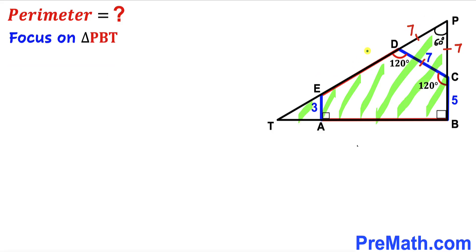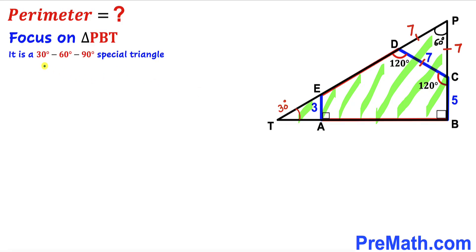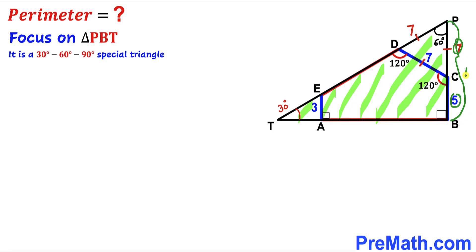Now we focus on the big right triangle PBT. We know one angle is 60 degrees and the right angle is 90 degrees, so the remaining angle must be 30 degrees. Therefore, triangle PBT is a special 30-60-90 triangle. This side of the triangle is going to be 5 plus 7, which gives us 12 units.